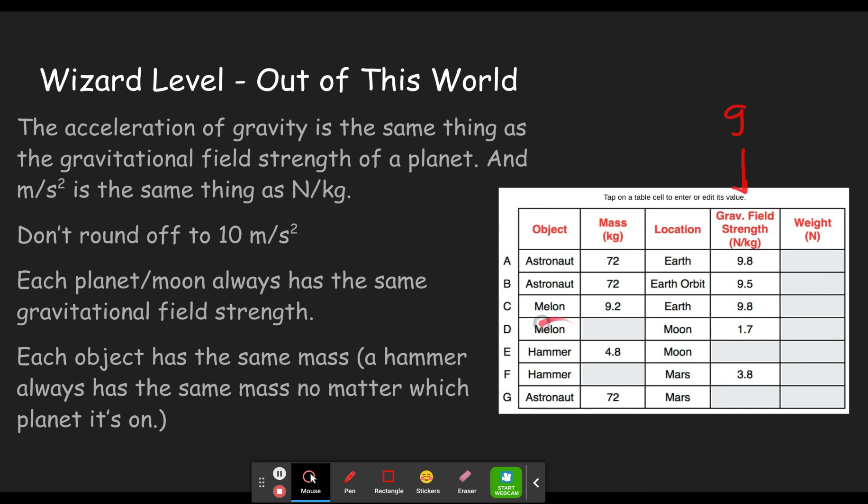Each object has the same mass. So this melon is the same melon as this melon. So they both have the same mass. These are both the same hammer being taken to two different places. So you're just doing W equals M times G.